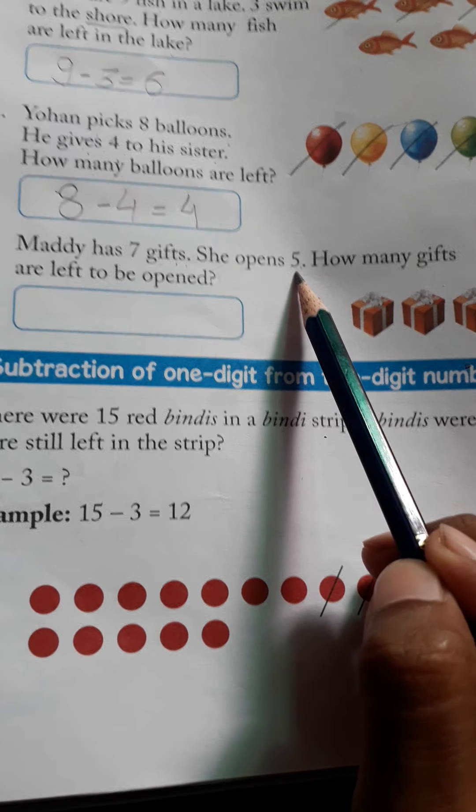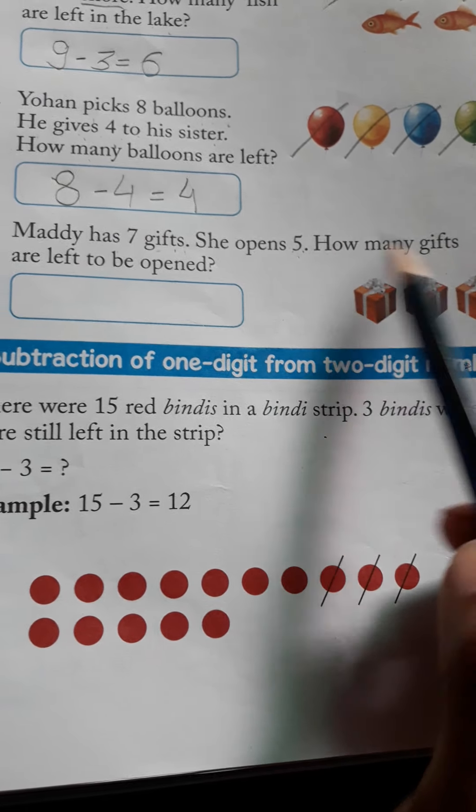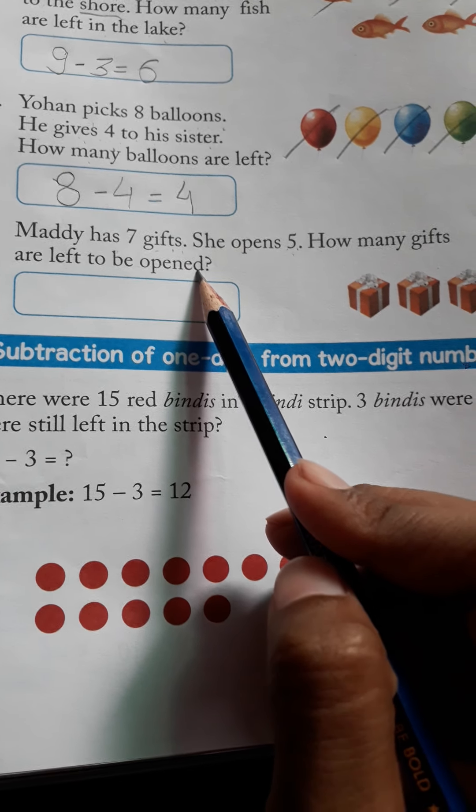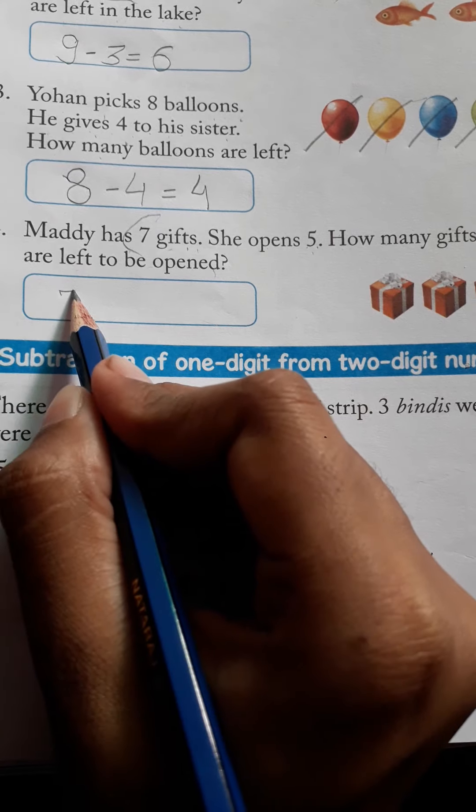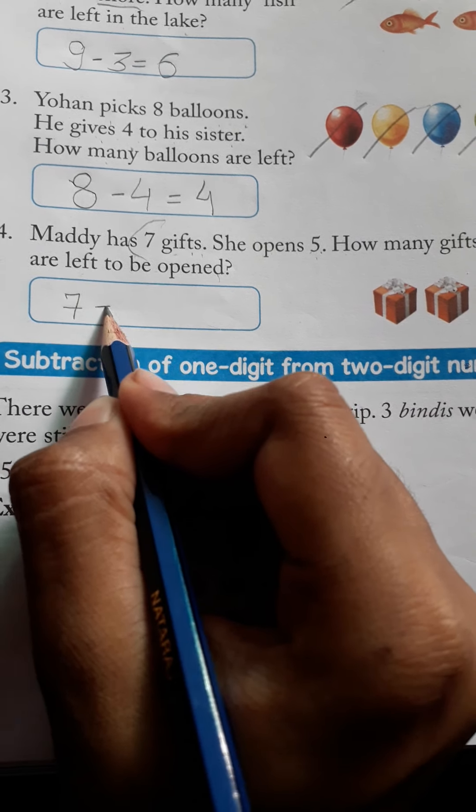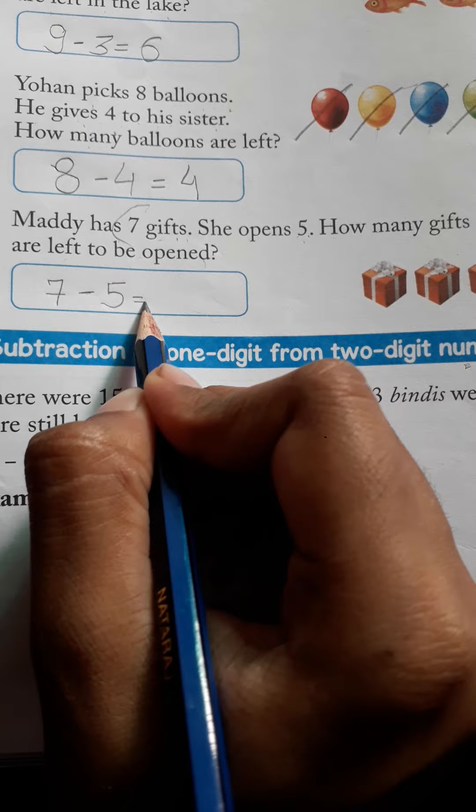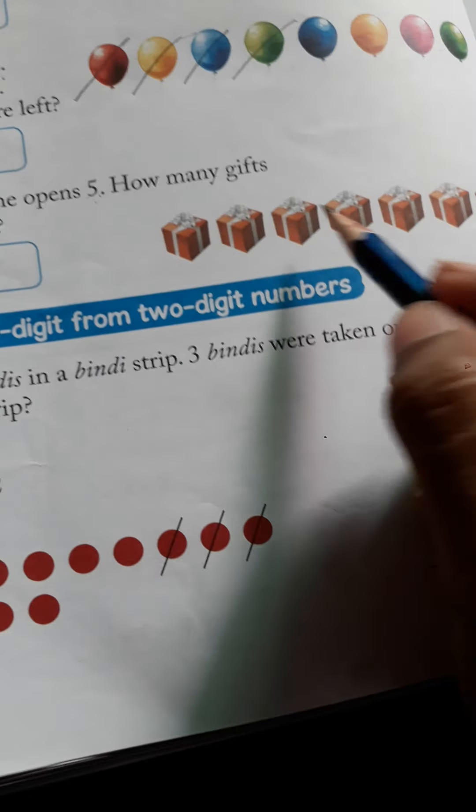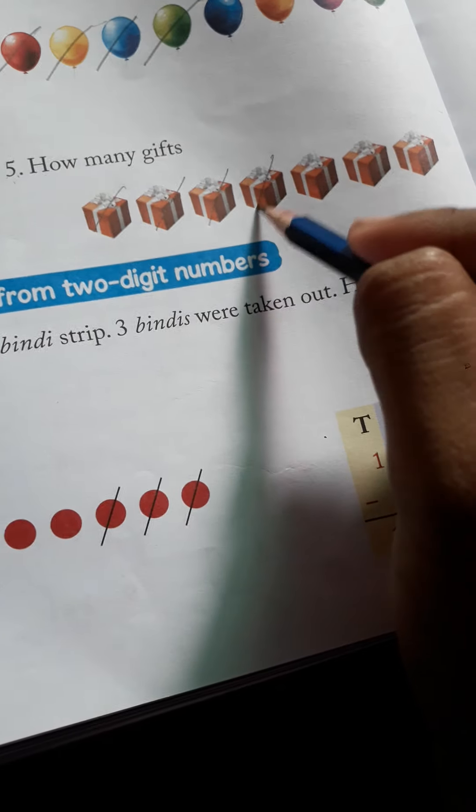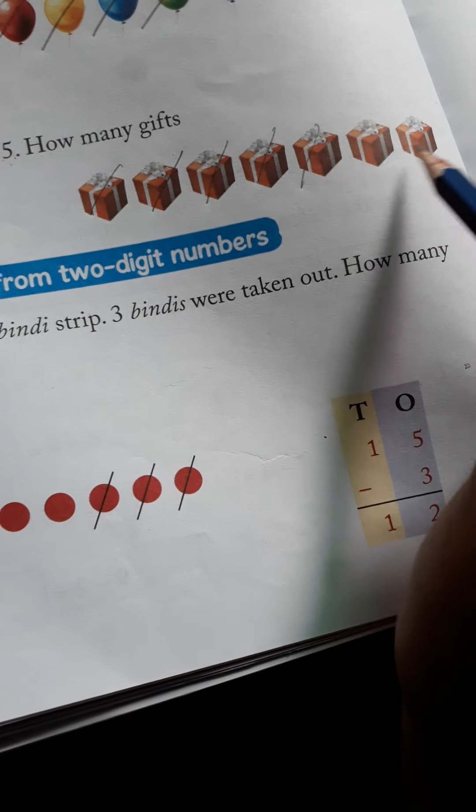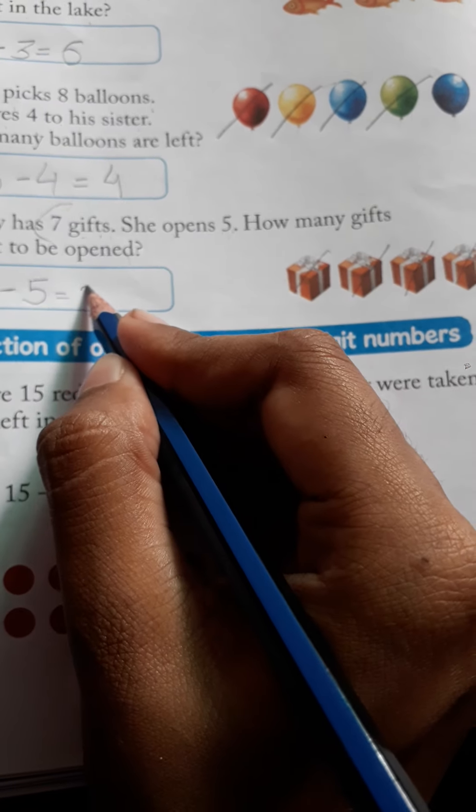She opened 5. How many gifts are left to be opened? The question is, she had a total of 7 gifts. Out of those, she opened 5 gifts. So how many gifts are left? Let's see: 1, 2, 3, 4, 5. Only 2 gifts are left.